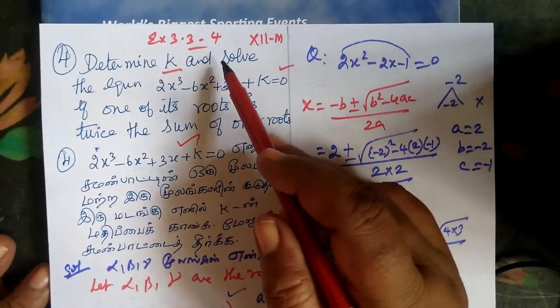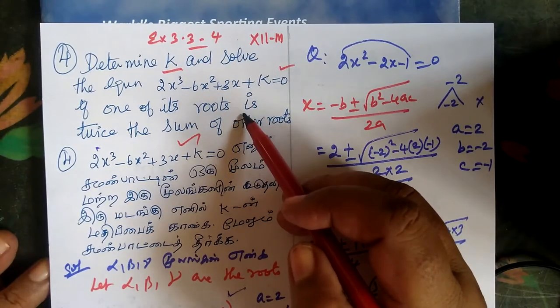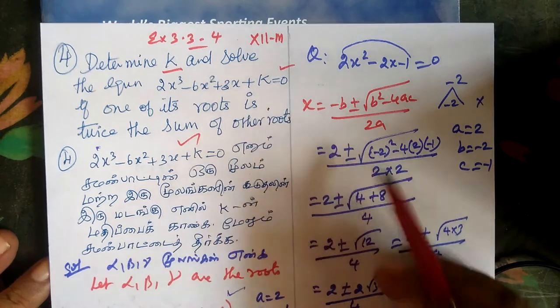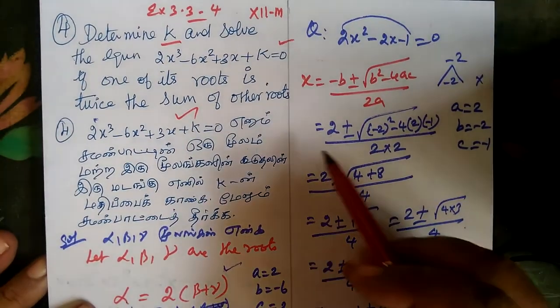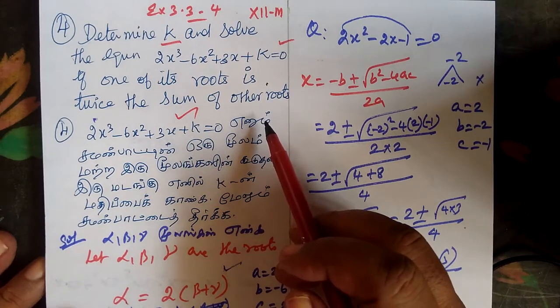Example 3.3, question number 4, 12th math. Determine the value of k and solve the equation 2x³ + 6x² + 3x + k = 0. If one of its roots is twice the sum of the other roots. So, let α, β, γ be the roots.